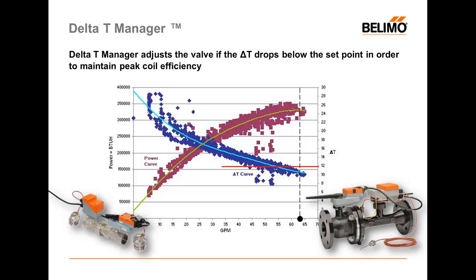Let's take an example here. Suppose the valve is flowing 64 gallons a minute. At this rate, we're achieving a very high amount of BTUs relative to the performance of the coil, but we're also creating a low Delta-T when we do that. We can see at this point the Delta-T is just above 10 degrees Fahrenheit, and we're creating about 325,000 BTUs.